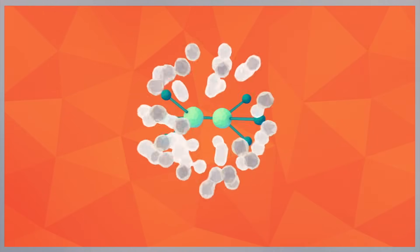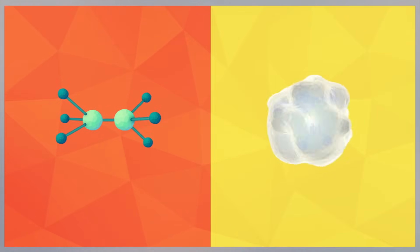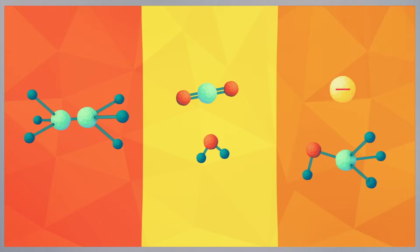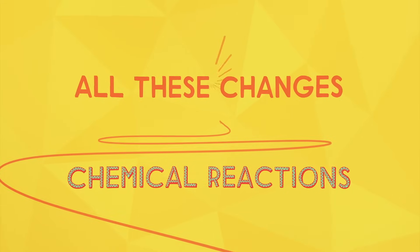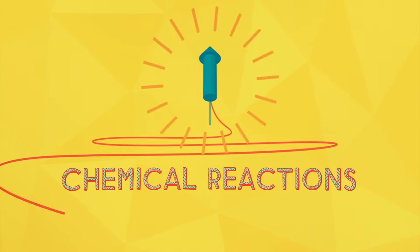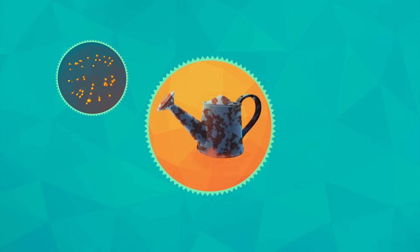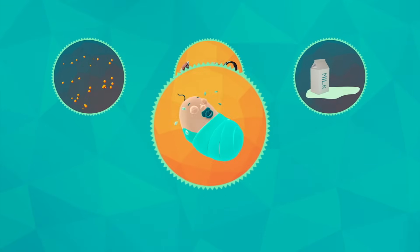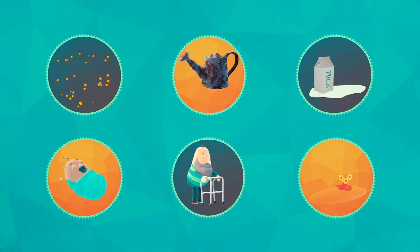Two molecules can join and become one. One can split apart and become two. Molecules can switch parts. All these changes are chemical reactions, and we can see them happening around us. For example, when fireworks explode, or iron rusts, or milk goes bad, or people are born, grow old, die, and then decompose.